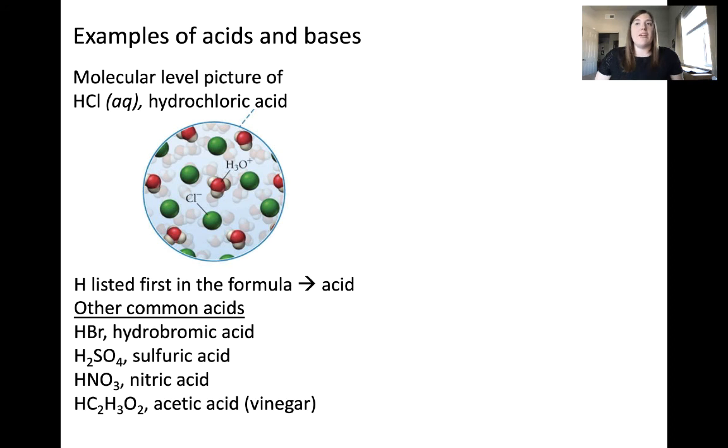You know that HCl is an acid because hydrogen is listed first in the formula. Some other common acids include HBr, hydrobromic acid, H2SO4, sulfuric acid, HNO3, nitric acid, and HC2H3O2, acetic acid or vinegar.